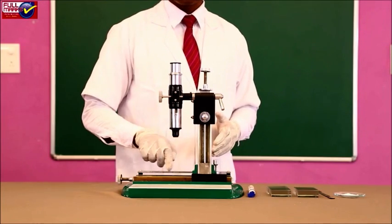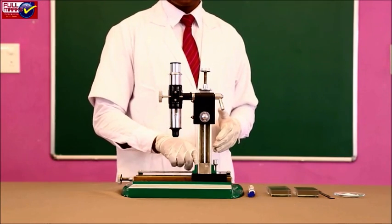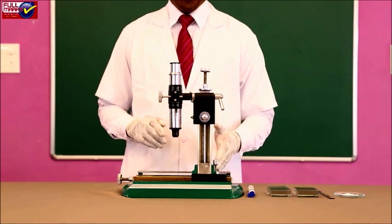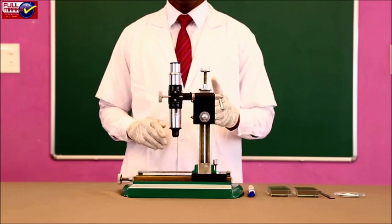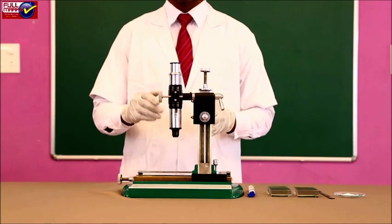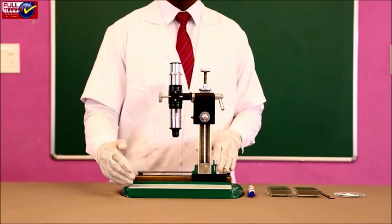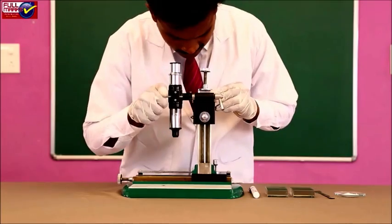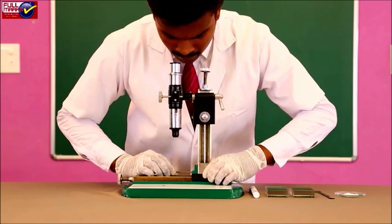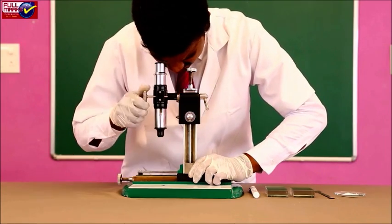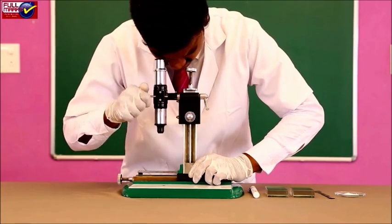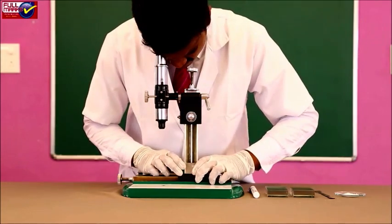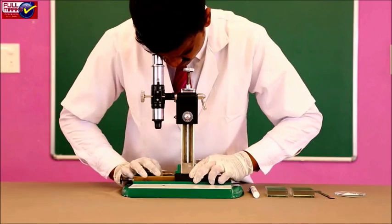Setting up the apparatus: Determine the least count of microscope scale as one micro scale division minus one vernier scale division. Place the travelling microscope on a horizontal table near a window to get sufficient light. Check with the spirit level and make necessary adjustment with leveling screws so that the base of the microscope becomes horizontal.